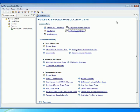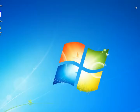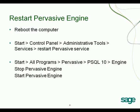Then close the Pervasive Control Center. To restart the Pervasive Engine, there are three ways. The first way is you can close everything and reboot the computer. When you do that, the Pervasive will have to be restarted.